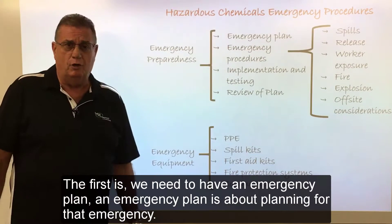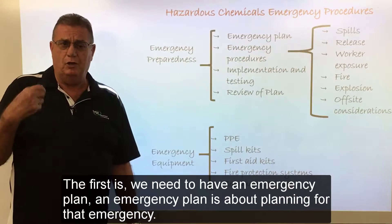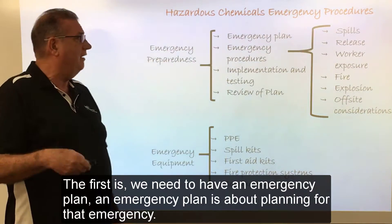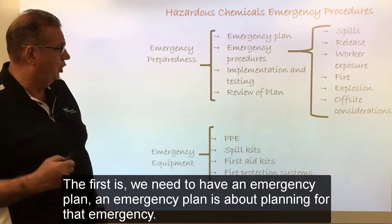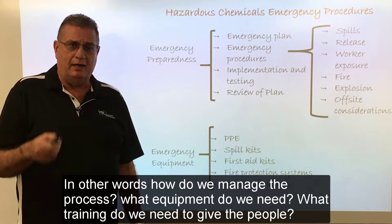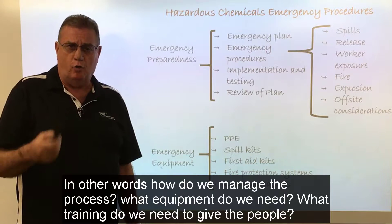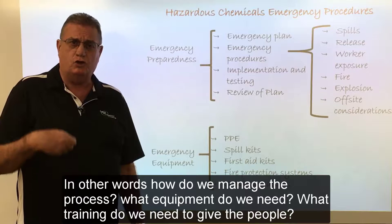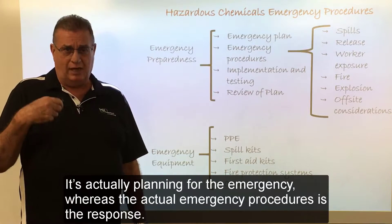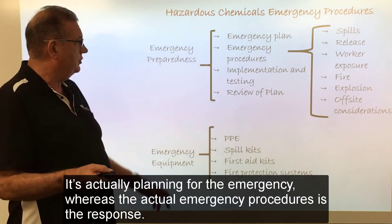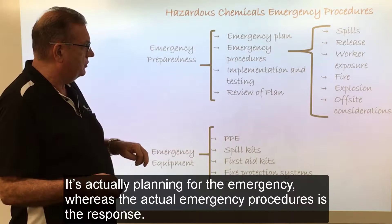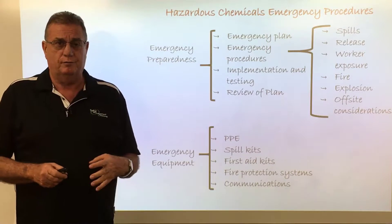The first is we need to have an emergency plan. The emergency plan is about planning for that emergency — how do we manage the process, what equipment do we need, what training do we need to give the people. So it's actually planning for the emergency, whereas the actual emergency procedures is the response.